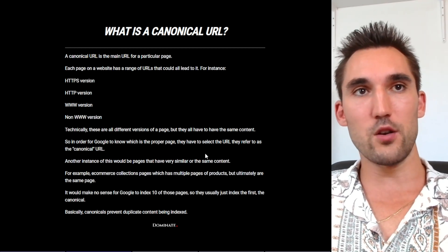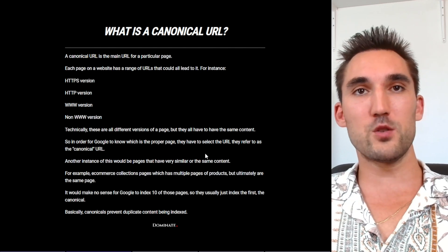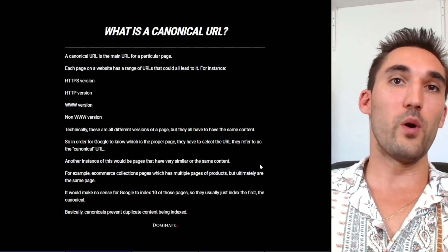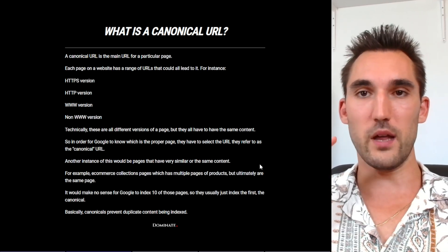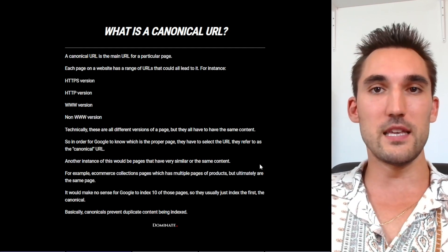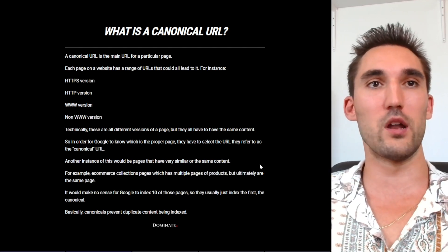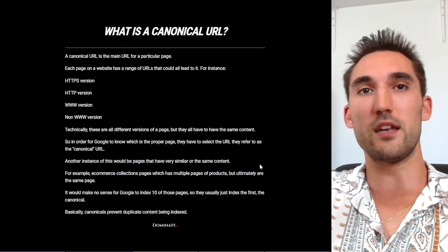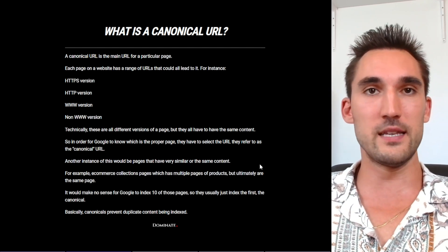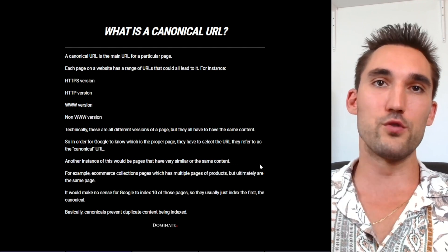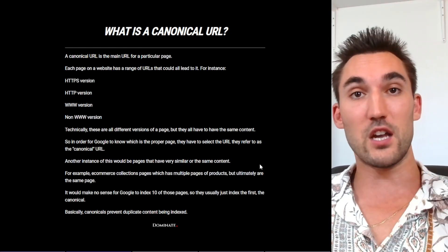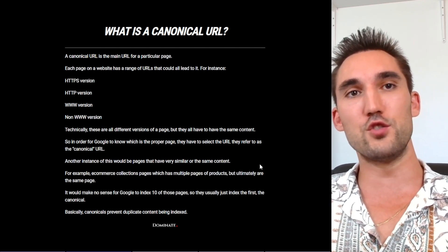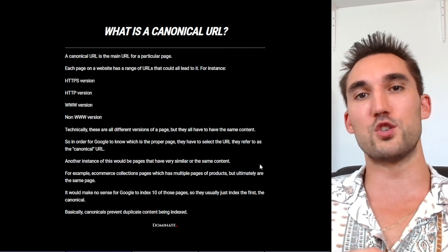Another instance where you would need canonical URLs is when there are pages with very similar or the same content. An example would be eCommerce collection pages where they list out all the products and have multiple pages — page one, page two, page three, etc. Ultimately these are all the same page, just displaying different products. It would make no sense for Google to index every one of those pages, like men's running shoes page one, page two, page three, page four. So what they will do is usually just index the first page, which is the canonical page. Canonicals prevent duplicate content from being indexed in Google, which they don't want.